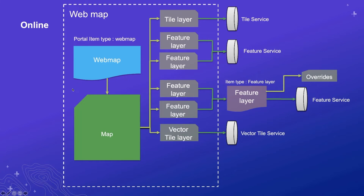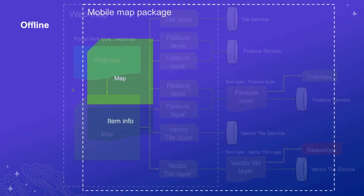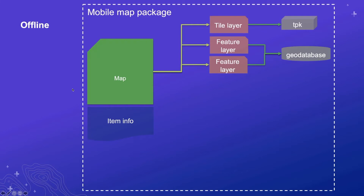A vector tile layer coming from a vector tile service, or a vector tile layer that points to a vector tile layer item in ArcGIS Online, which similarly to the feature layer item, points at the originating service and has style overrides — for example, ones you would create with a vector tile style editor. When we talk about maps offline, we have a structure that mimics what we just saw in the web map: some JSON that glues together different layer types.